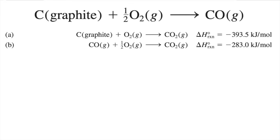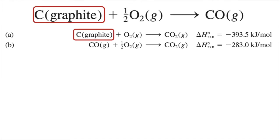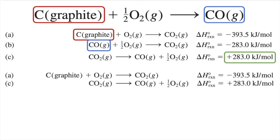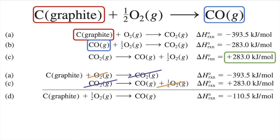Remember the rule: you can reverse an equation, but you must also reverse the sign. We reverse equation B — because in the main equation, graphite is the reactant (so equation A stays as-is) and carbon monoxide appears on the product side. Equation B has CO on the reactant side, so we reverse it to get equation C, where ΔH is now positive. Adding the two equations, CO₂ cancels, and 1 mol O₂ − ½ mol O₂ gives ½ O₂. The standard enthalpy of formation of CO is −110.5 kJ/mol.